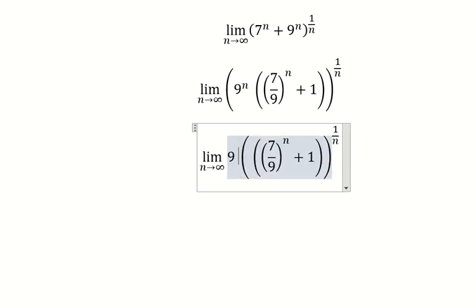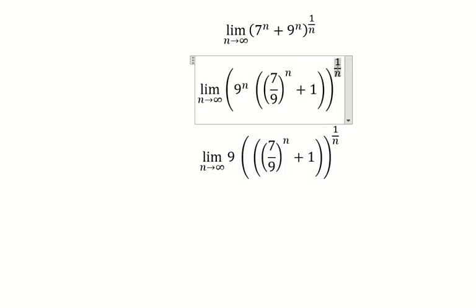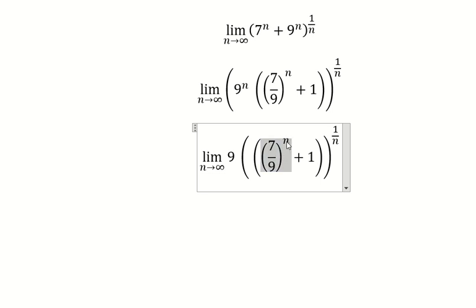So you get 9 because one over n multiplied by n equals one. Next, when n approaches positive infinity, we have 7 over 9 which is smaller than one. When this goes to infinity, you get zero.